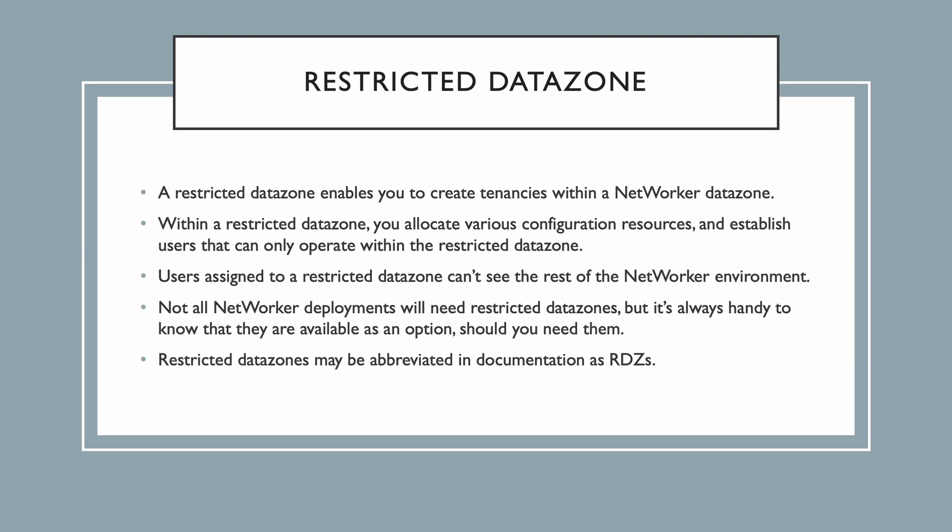You may not always see restricted data zones within NetWorker deployments, as they're not always necessary. You can think of a restricted data zone as a tenancy within NetWorker, though it may be more correct to think of it as a collection of configuration resources. You use restricted data zones to logically isolate systems that you're backing up from one another, and you can map users to operate only within a specific restricted data zone if you need to. While you won't see a restricted data zone in every NetWorker deployment, it is very handy to know that these exist and they can be used to provide additional security controls.